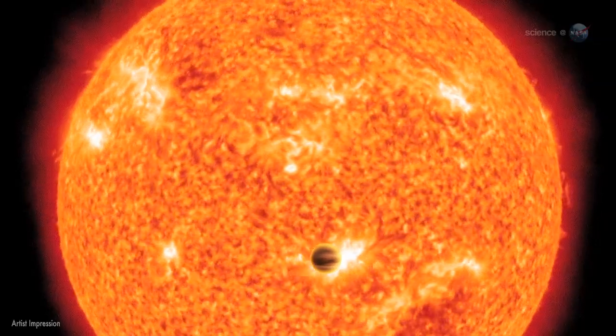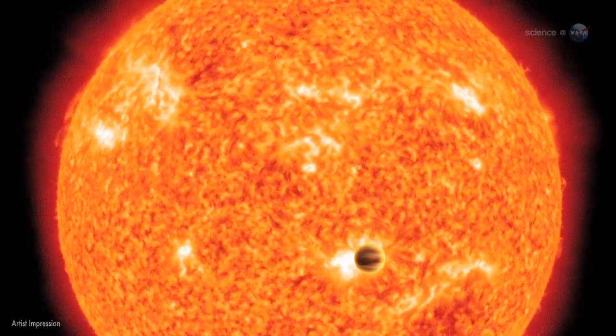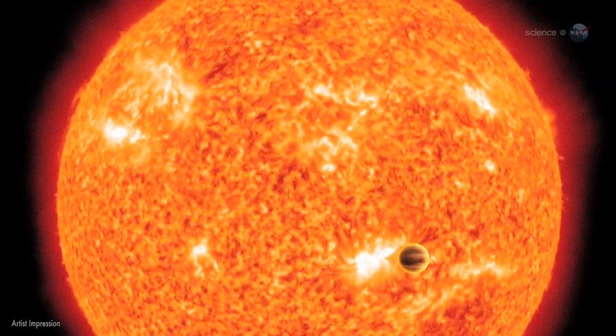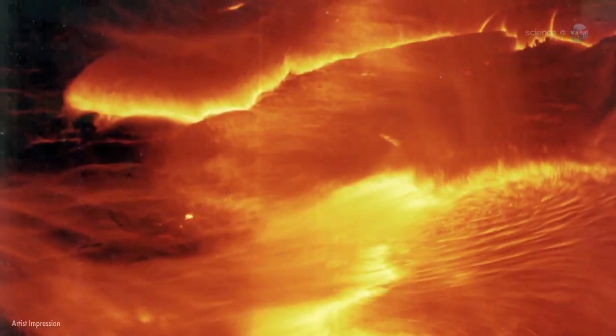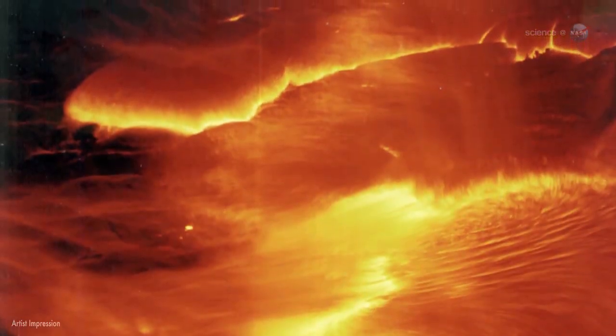the alien planet is 26 times closer to its parent star than Mercury is to the Sun. If Earth were in the same position, the soil beneath our feet would heat up to about 3,200 degrees Fahrenheit.